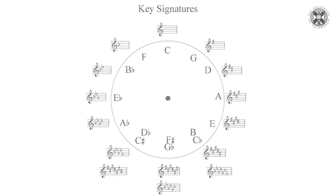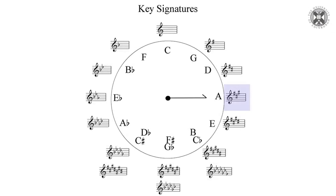You'll notice that the cycle of fifths is proceeding in literally stages of a fifth: C, D, E, F, G — and then G, A, B, C, D. Each stage includes five note names forwards, and each stage includes one additional sharp as we go around the circle.